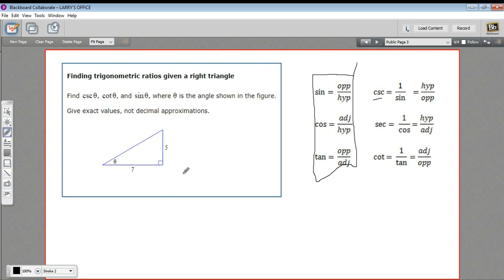So to solve a problem like this, we're going to find that third side using the Pythagorean theorem, and then we need to find cosecant, cotangent, and sine. We'll just set up the ratios, and those will be our answers. All right, so let's find this third side.